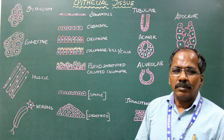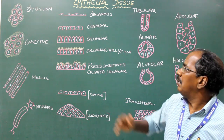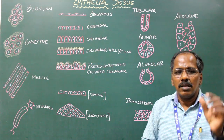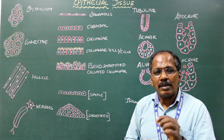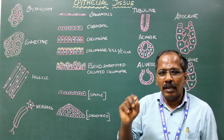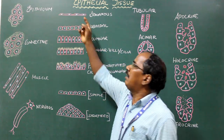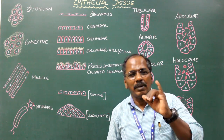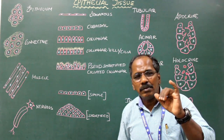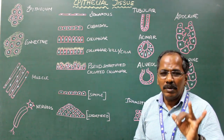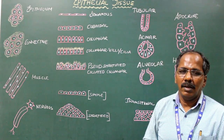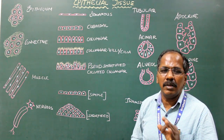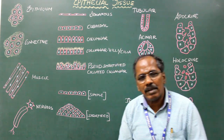Simple epithelium is divided into simple squamous, simple cuboidal, and simple columnar epithelium. Squamous means flat. Simple squamous epithelium consists of a single layer of flat epithelial cells. Examples include the epithelium of the alveoli of the lungs, mesothelium lining the peritoneum, pleura and pericardium, and endothelium lining the blood and lymph vessels.